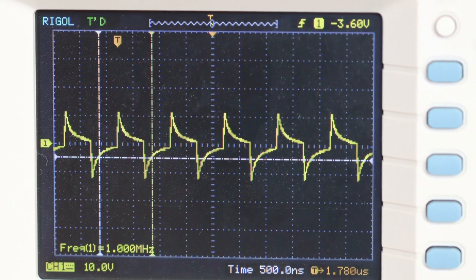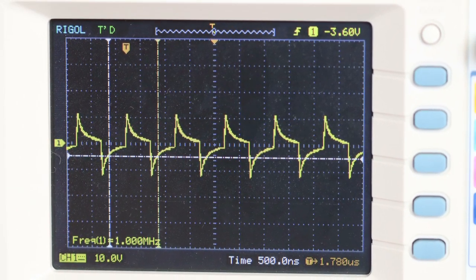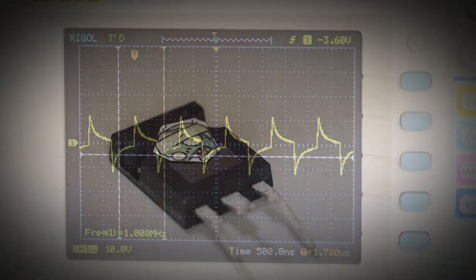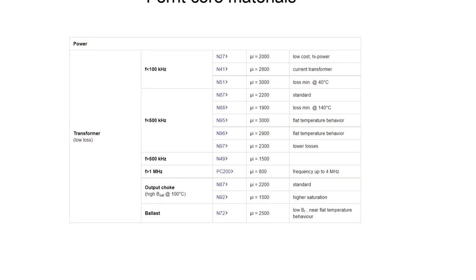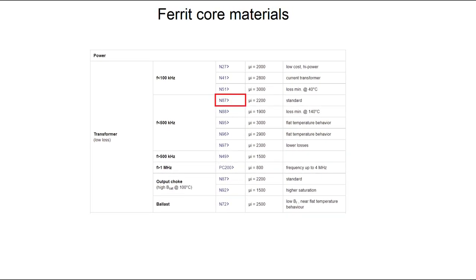If we do not pay attention to these properties, the gate signal looks like a mess and this leads to dead semiconductors. Here is a list of different ferrite materials. I always use N87, but from 700 kilohertz you should use for example N59.